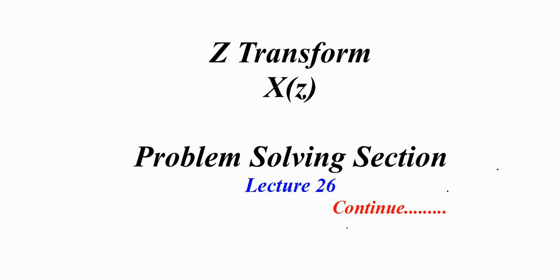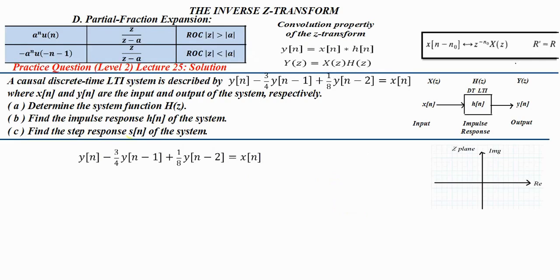In lecture 26 we will discuss the solution of the previous problem discussed in lecture 25. A causal discrete time LTI system is described by a difference equation, where x(n) indicates the input and y(n) the output. We need to find the transfer function H(z), the impulse response h(n), and the step response.